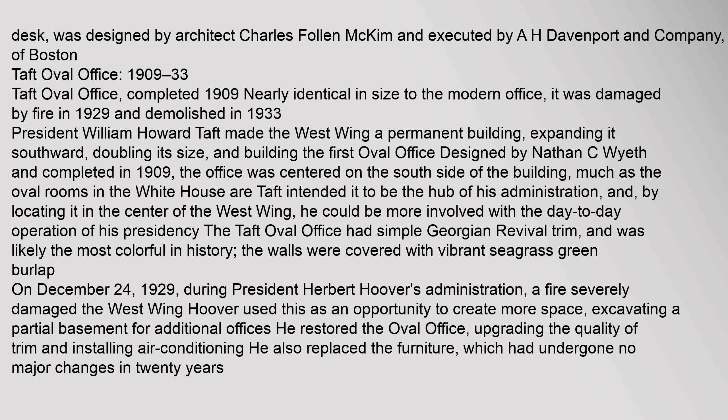President William Howard Taft made the West Wing a permanent building, expanding it southward, doubling its size, and building the first oval office, designed by Nathan C. Wyeth and completed in 1909. The office was centered on the south side of the building, much as the oval rooms in the White House. Taft intended it to be the hub of his administration, and by locating it in the center of the West Wing, he could be more involved with the day-to-day operation of his presidency.